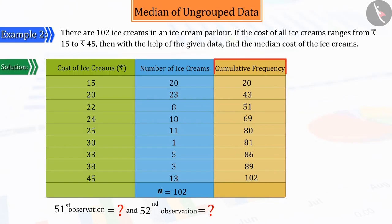From the above table, we can see that the 51st observation is 22 and the 52nd observation is 24, because out of the 102 ice creams, the price of ice creams from 52 to 69 is Rs. 24.